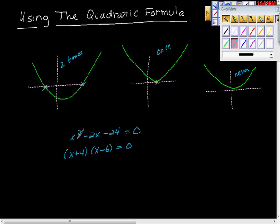If we foil this back, we'll get this equation, won't we? So by using this method, we could just solve this and say when is x plus 4 equal to zero? And we'd say when x is equal to negative 4. And we could ask ourselves this question: when is x minus 6 equal to zero? And the answer to that is when x equals 6.